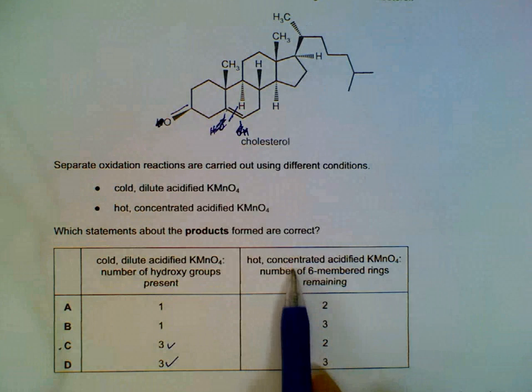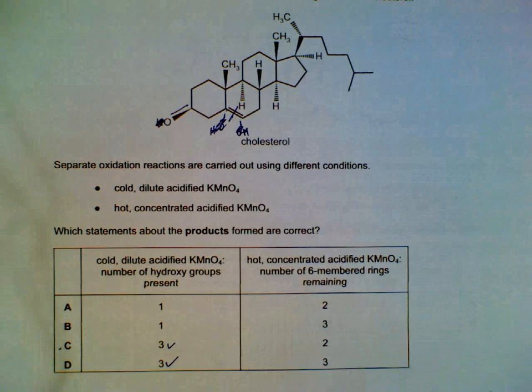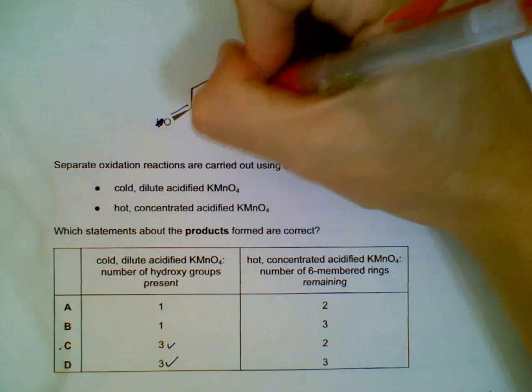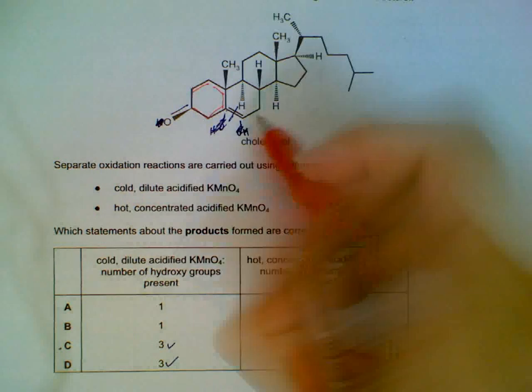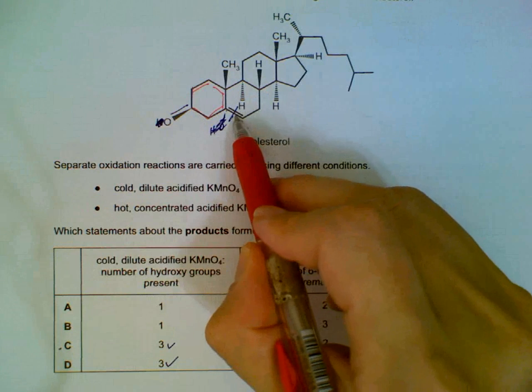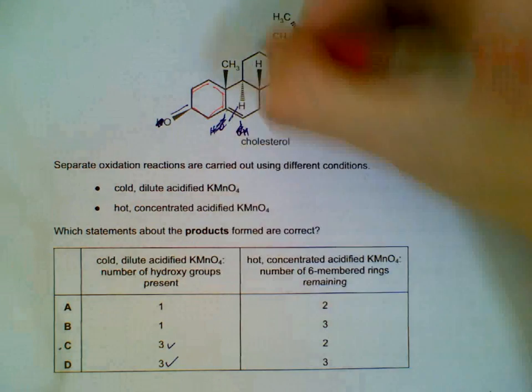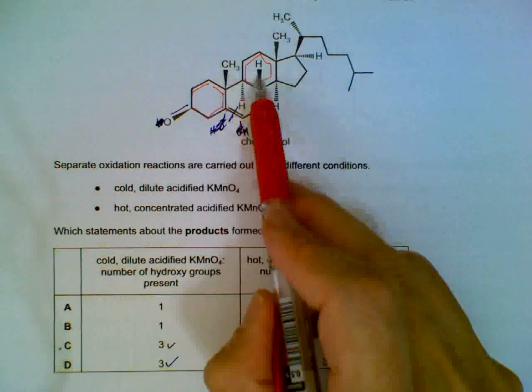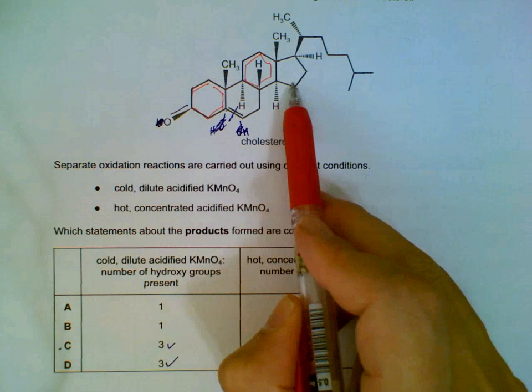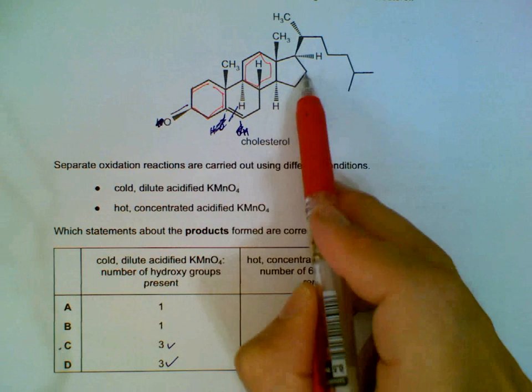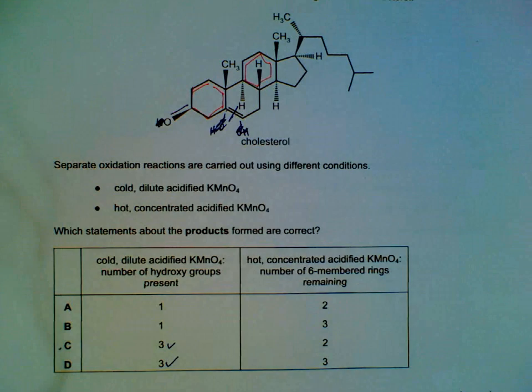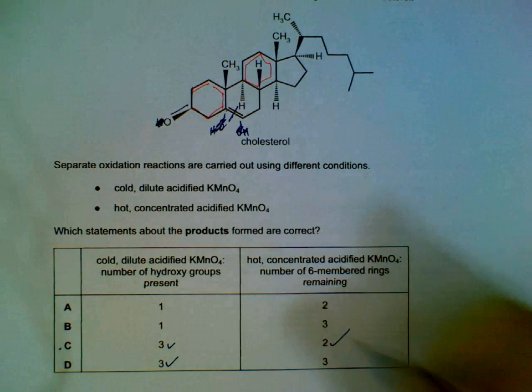But they're asking us how many six member rings will remain. So the six member rings we will have, one left. This one is broken, so no longer a ring. Two rings left. We do not include this because this is five membered carbon. Five carbons. One, two, three, four, five. So we only have two rings left.